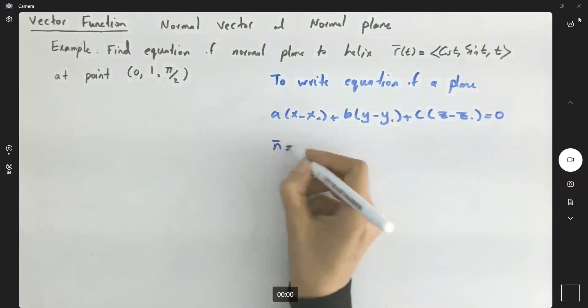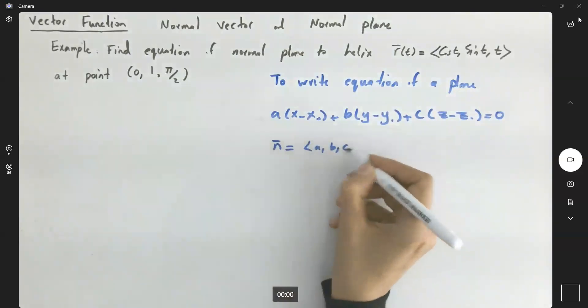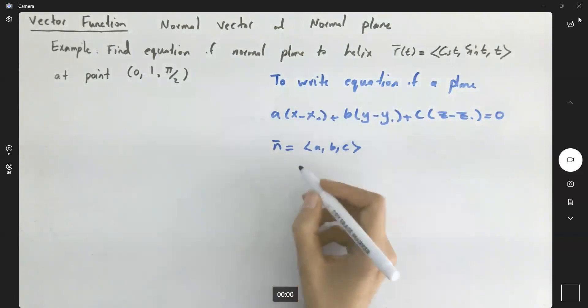You have the normal vector ⟨a, b, c⟩ and you have a point (x₀, y₀, z₀) on your plane.